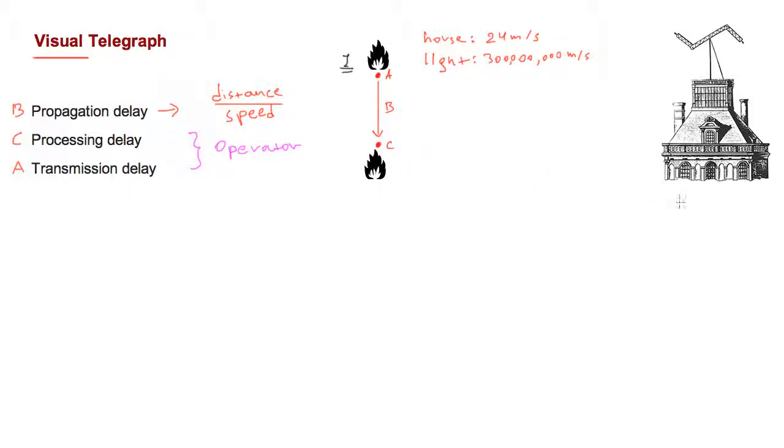So to solve this problem, in around the mid 1700s, we invented the visual telegraph, which is also commonly known as a semaphore. And the idea for the semaphore was to encode visual signals by using these mechanical arms. And different positions would mean different letters.